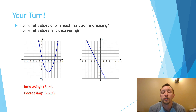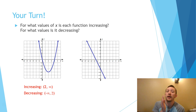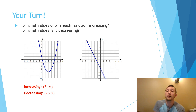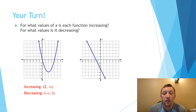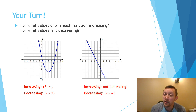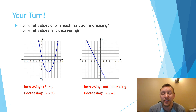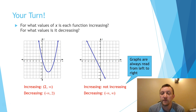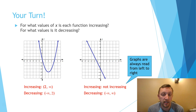All right, let's see how you did. For the first graph, it's increasing from 2 to infinity. The vertex is at (2, -4), so from where x is 2 going right, it's increasing. It's decreasing from negative infinity to 2. For the other graph — this was meant as a trick question. When we read it from left to right, it's not increasing at all; it's decreasing. So we say it's decreasing from negative infinity to infinity. Graphs are always read from left to right, which is how you can tell with linear equations.